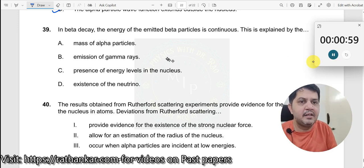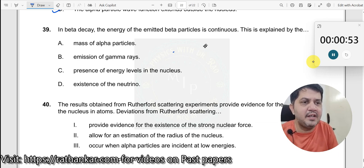Question number 39: In beta decay, the energy of the emitted beta particles is continuous. This is explained by what? To understand this, let's first look at alpha decay. If you plot a graph of energy of the alpha particle versus the number of particles which are decayed...